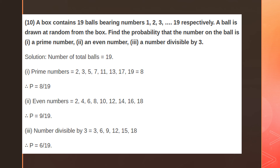What is the probability of getting an even number? The even numbers from 1 to 19 are: 2, 4, 6, 8, 10, 12, 14, 16, and 18. So the probability of getting an even number equals 9 by 19.